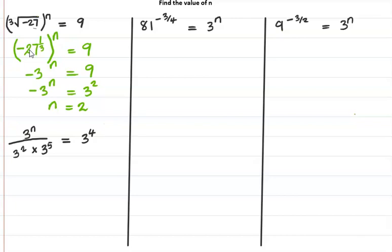Let's verify: the cube root of negative 27 is negative 3. Negative 3 squared is negative 3 multiplied by negative 3, which is 9. So the left-hand side equals the right-hand side, confirming that n is indeed 2.